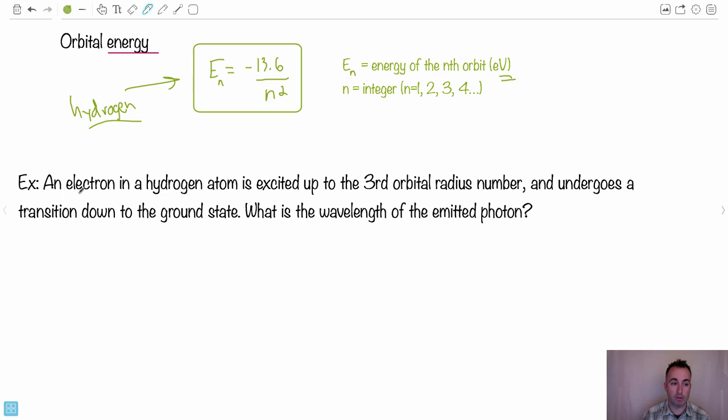So En is the energy of the nth orbit, but it's important it's in electron volts. Maybe it's a good idea to just do this question here, so just to have a little bit of practice. This is an exam kind of question. So we have an electron in a hydrogen atom. It's excited up to the third orbital radius number. That means now it's at n equals 3. Then it undergoes a transition down to the ground state. Ground state is n equals 1. So now it goes from n equals 3 to n equals 1. What's the wavelength of that photon?